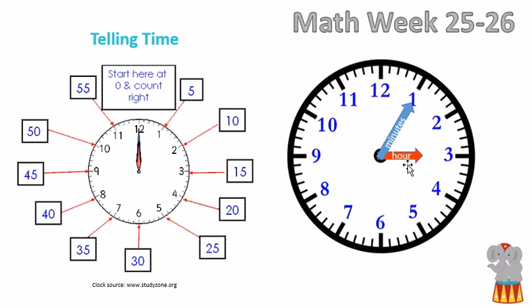If the short hand is pointing at the 3, like on this clock, then it is 3 o'clock. But what about the minutes? If the long hand is pointing at the 1, then it is 3:05.